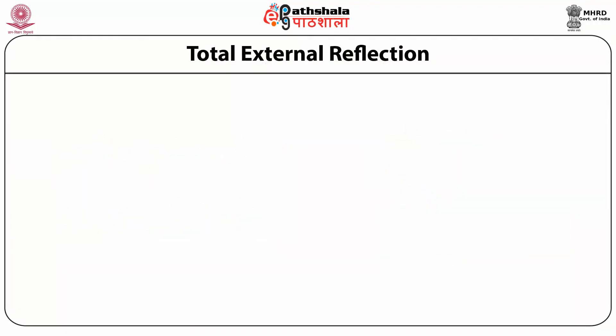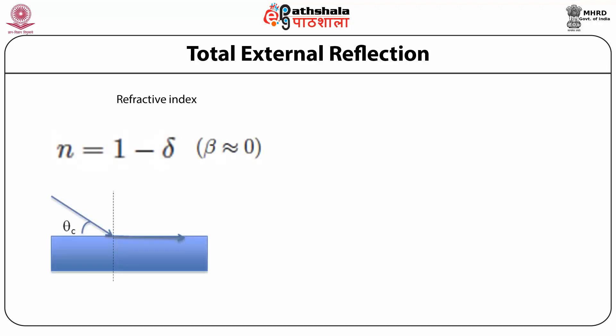Looking at the real part of the refractive index, which is 1 minus delta, this tells us that the refractive index of the medium is less than 1 — less than the refractive index of vacuum or air for x-rays. When this happens, a phenomenon of total external reflection takes place.